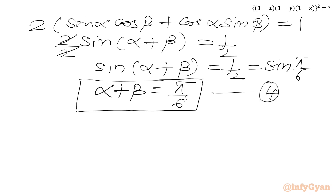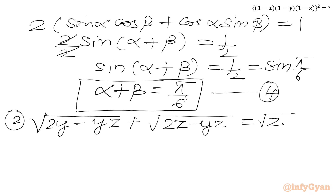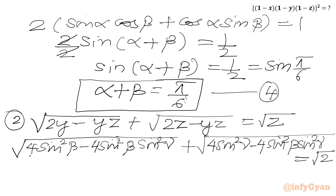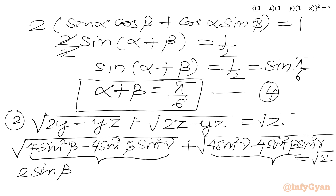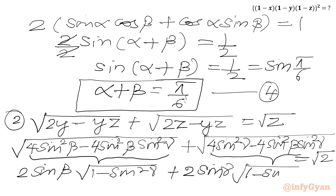Now we are going to put x, y, z into equation 2. Taking 4 sin²β common from the first square root and 4 sin²γ common from the second, we write 2 sin β · √(1 − sin²γ) plus 2 sin γ · √(1 − sin²β) equal to √2.